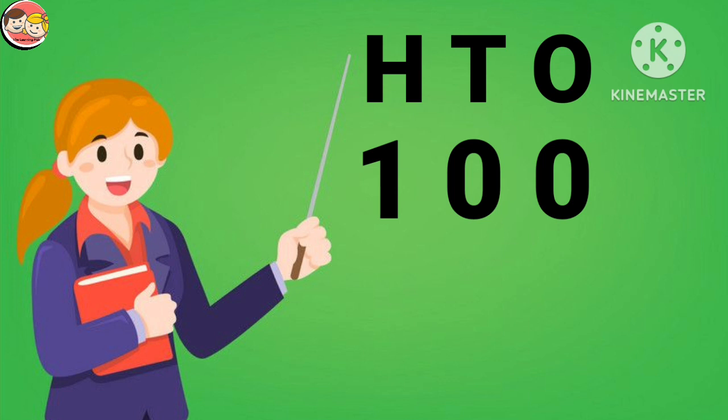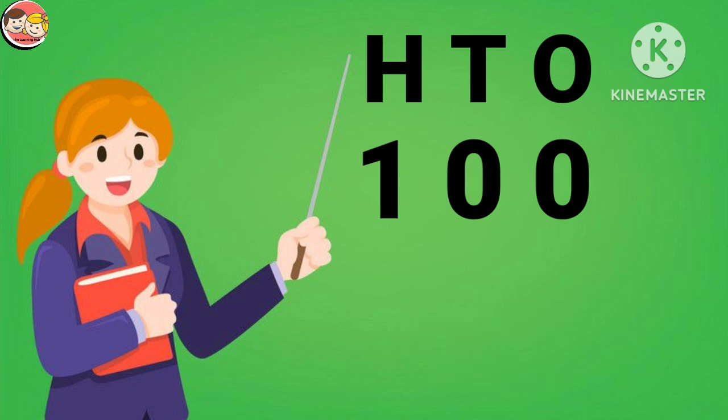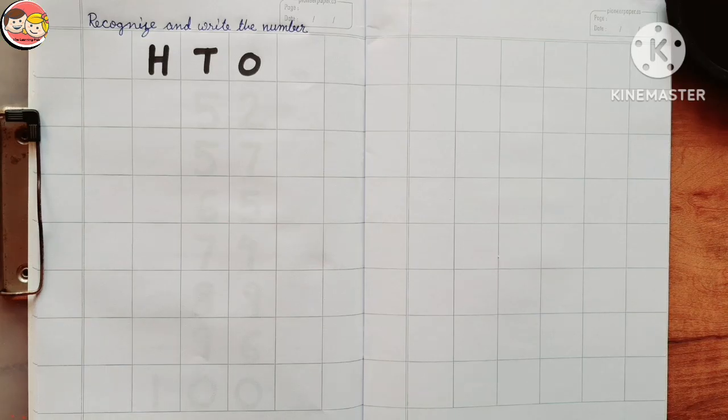2-digit numbers start from 10 and end on 99. So 10 is the smallest 2-digit number and 99 is the greatest 2-digit number. There are 2 digits in a 2-digit number. But after 99, there are 3 digits that form the number 100: 1, 0, 0. So number 100 is a 3-digit number.